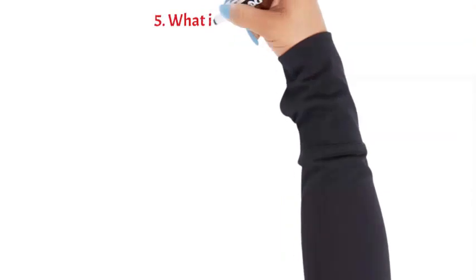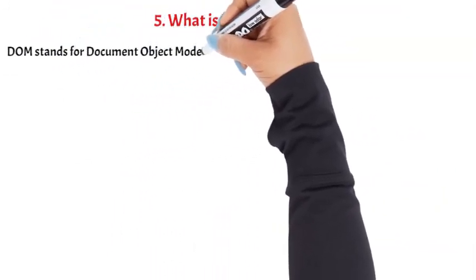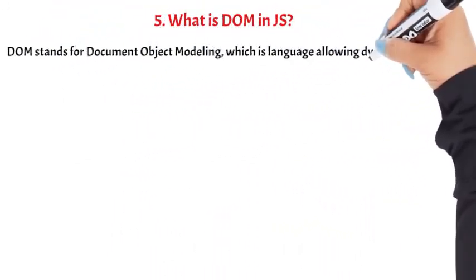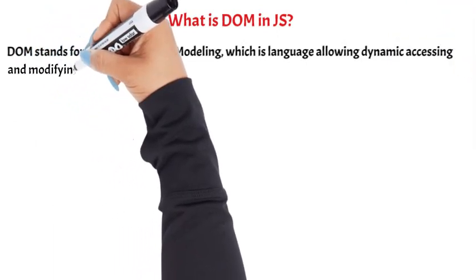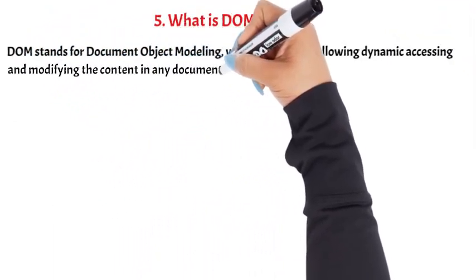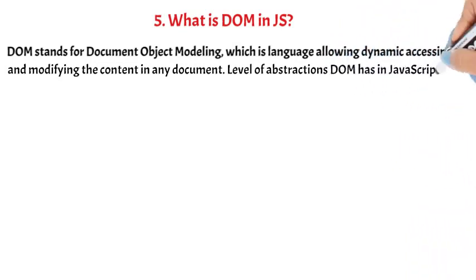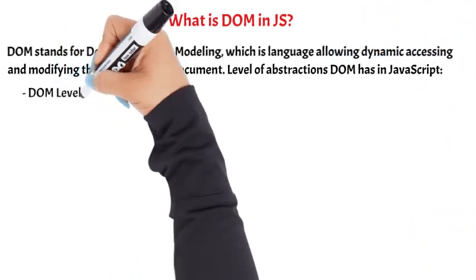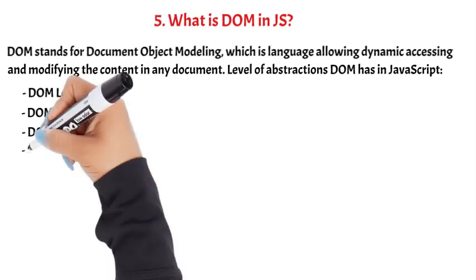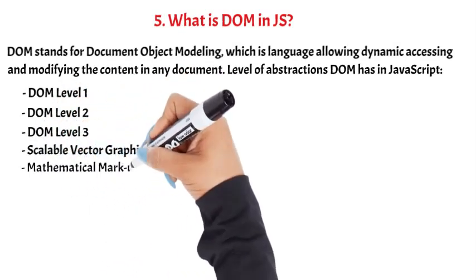Question 5: What is DOM in JS? DOM stands for Document Object Model, which is a language allowing dynamic accessing and modifying of content in any document. The levels of abstraction DOM has in JavaScript are: DOM Level 1, DOM Level 2, DOM Level 3, Scalable Vector Graphics, and Mathematical Markup Language.